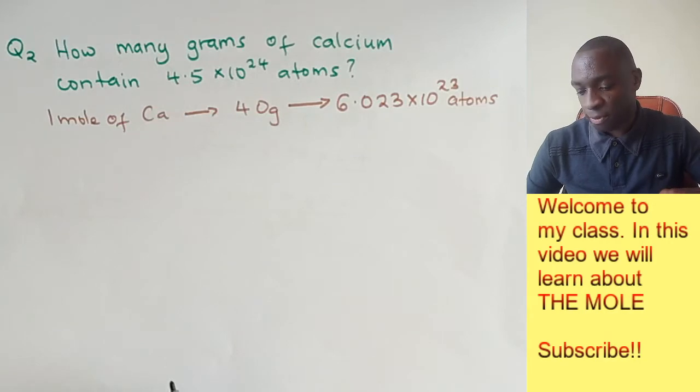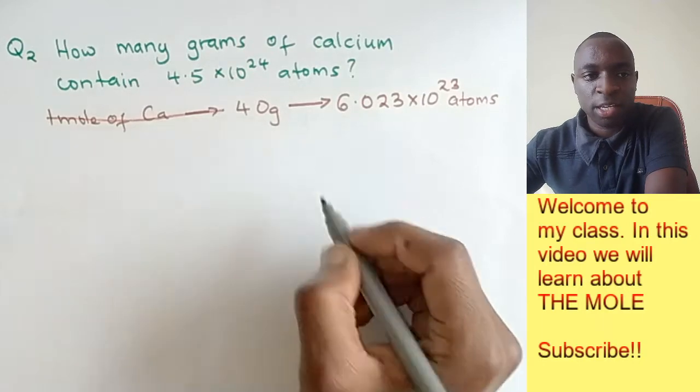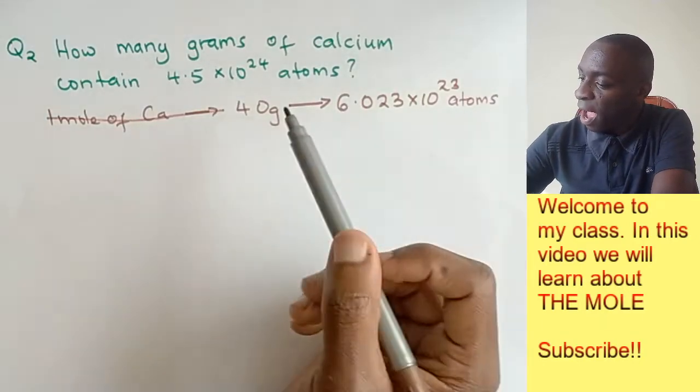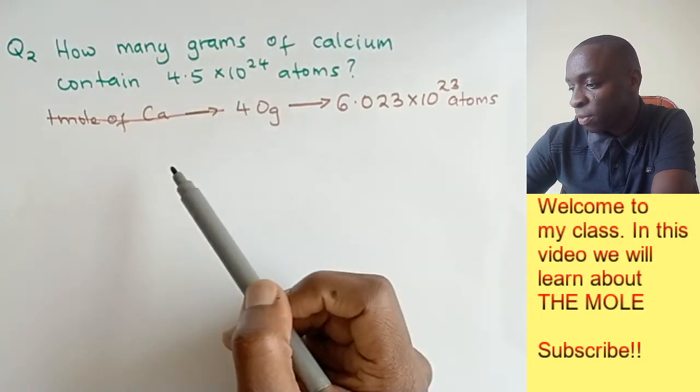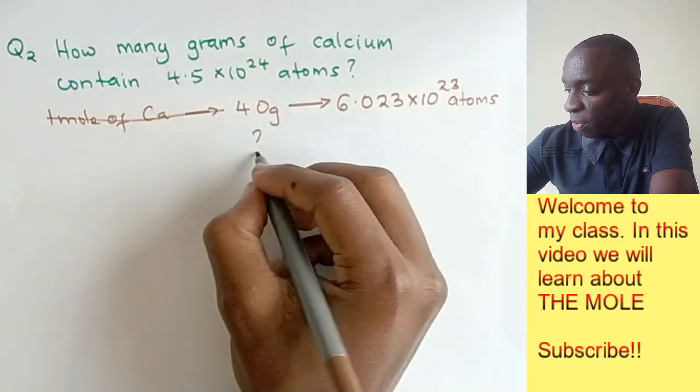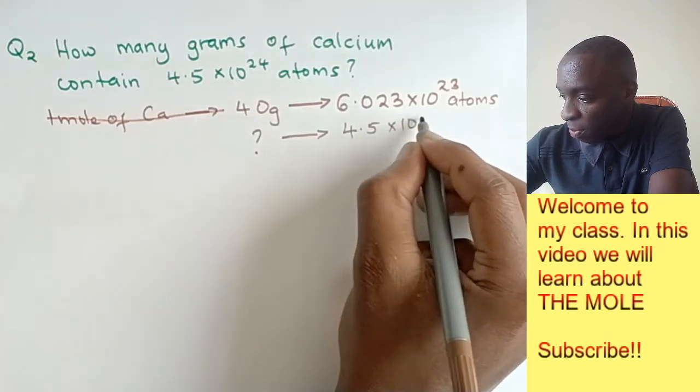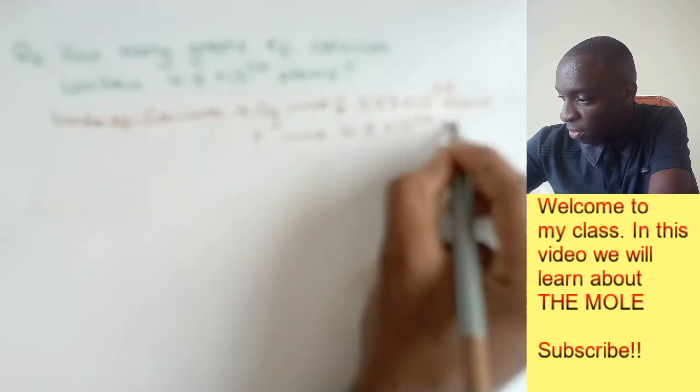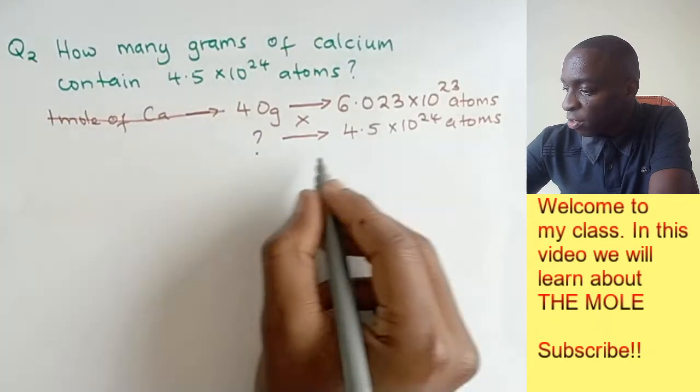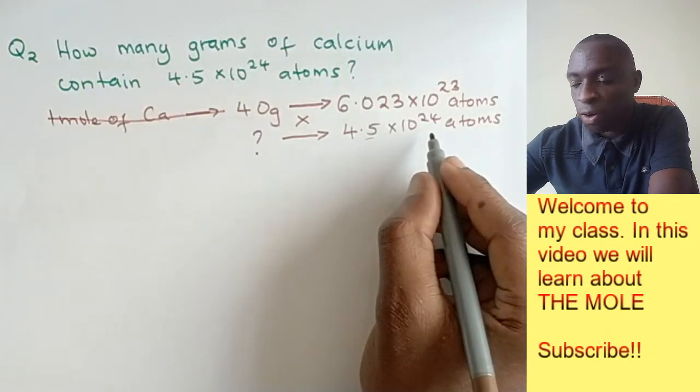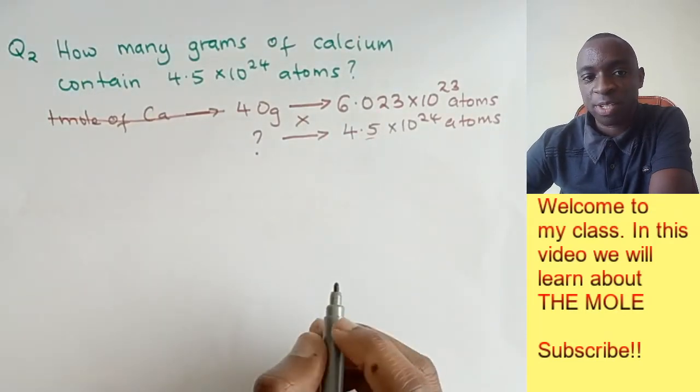We can extend this and say that 40 grams contains 6.023 times 10 to the power of 23 atoms. If we ignore this for now, the question becomes: how many grams of calcium will have 4.5 times 10 to the power of 24 atoms?